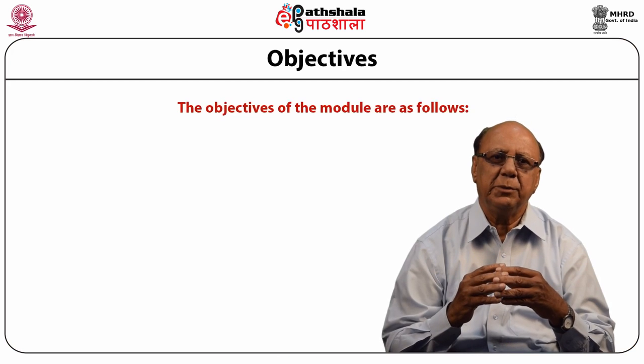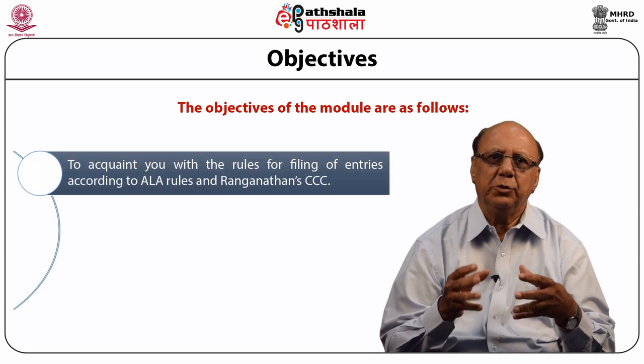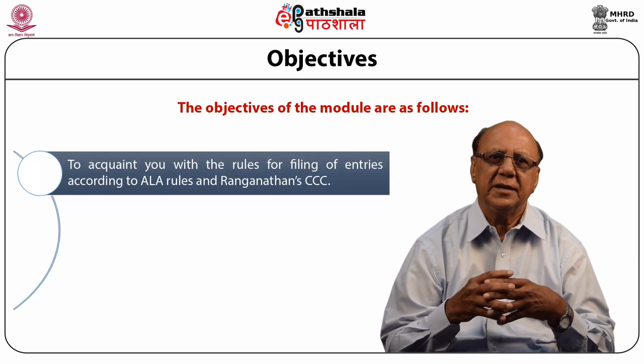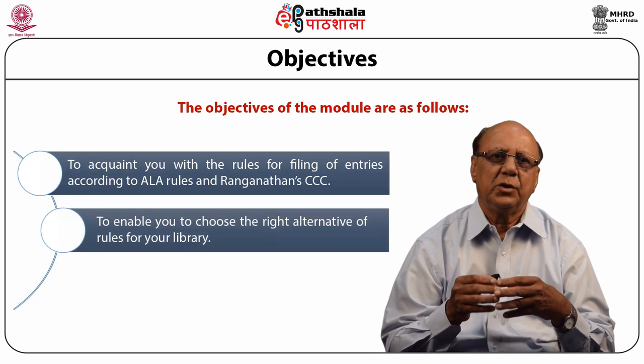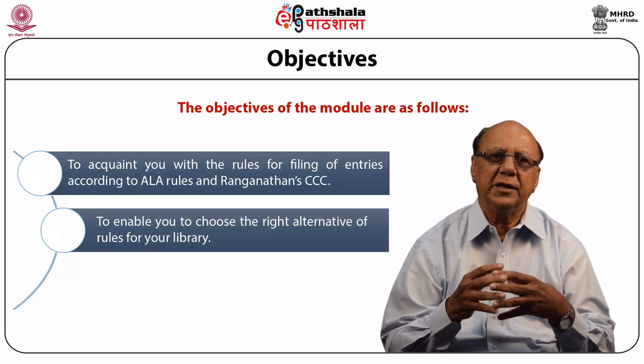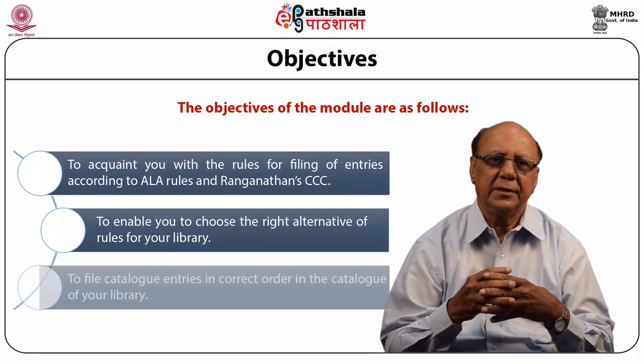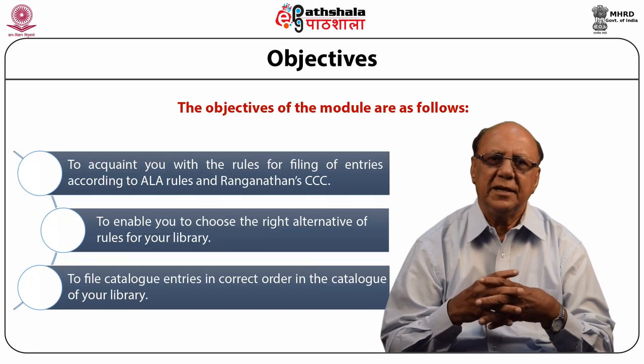Arrangement is the vital essence of cataloging. Filing of entries is an important part of cataloging, and sufficient thought has been given to this part by catalogists. The main objectives of this module are: first, to acquaint you with the rules for filing of entries according to ALA rules and Ranganathan's CCC; second, to enable you to choose the right alternative of rules for your library; and third, to file catalog entries in correct order in the catalog of your library.